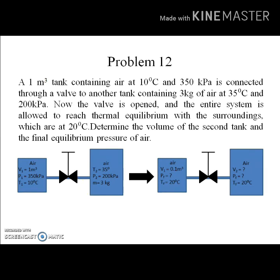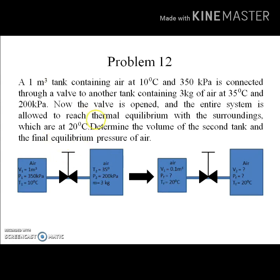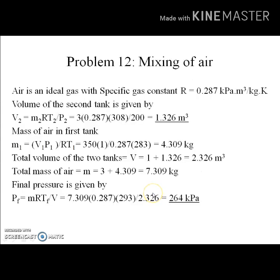If you haven't seen problem number three from video two, go and see that so your concepts are clearer. Coming back to this problem: tank one contains air at 10 degrees centigrade and 350 kilopascal, with a volume of one meter cube. Tank two has a temperature of 35 degrees and pressure of 200 kilopascal, and the mass of air in it is 3 kg. We need to find the final pressure and the volume of the second compartment.